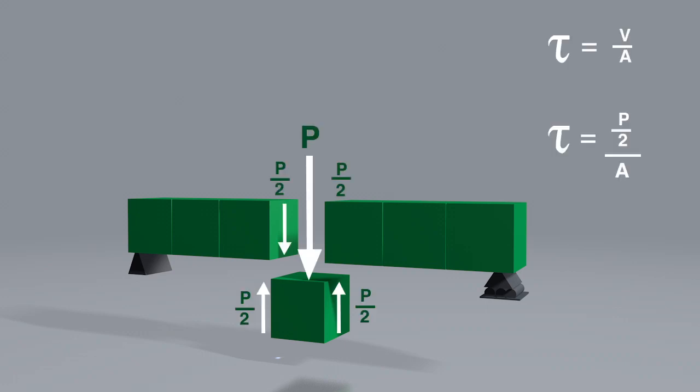It's important to remember that V over A is only the average shear stress. In reality, the shear stress distribution is not uniform and the maximum shear stress will be higher than the average shear stress.